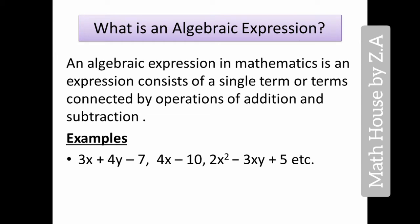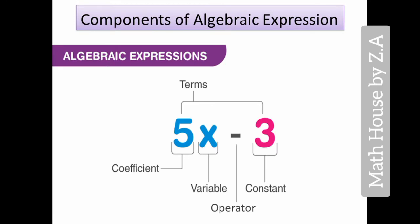You could have just one term like 3x - that is also an algebraic expression. 4x - 10, here we have two terms with one operator, this is also an algebraic expression. 2x² - 3xy + 5 and others are all examples of algebraic expressions.